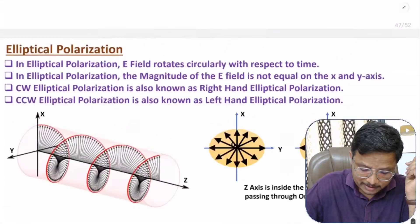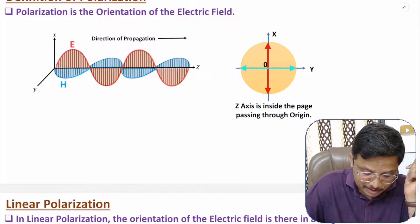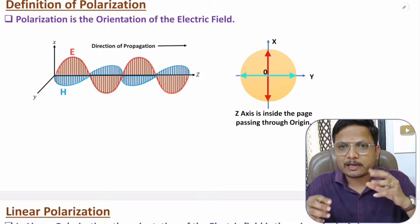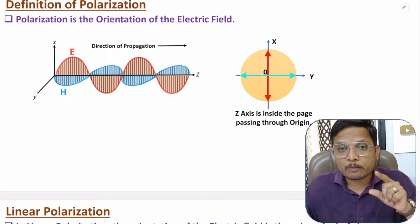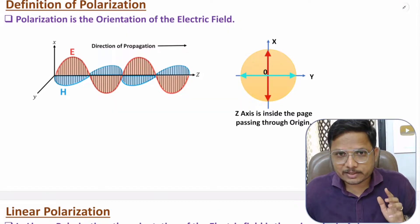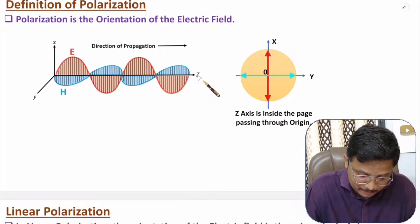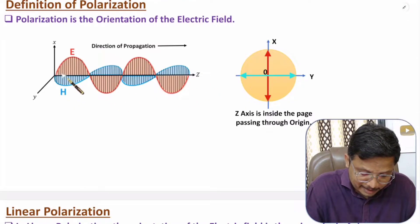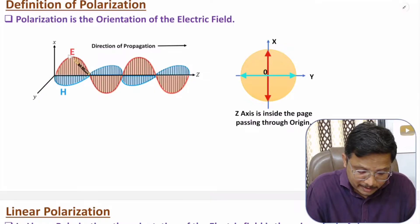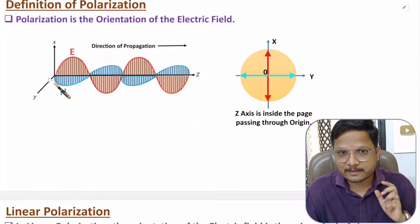Let us begin with the first agenda: the definition of polarization. Polarization is the orientation of the electric field. So as and when you see electromagnetic waves in space, you will have to observe the orientation of the electric field. Here we have x-axis, y-axis, and z-axis. We have EM waves where the electric field is changing with respect to the x-axis.